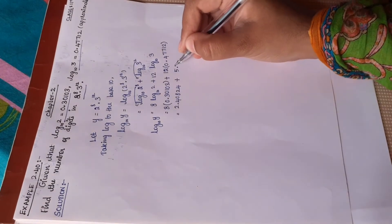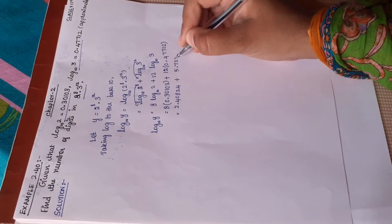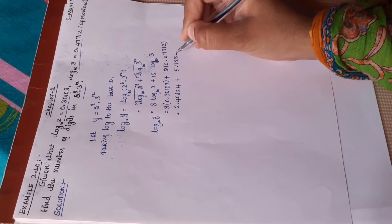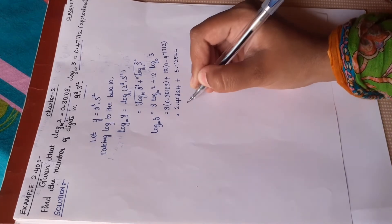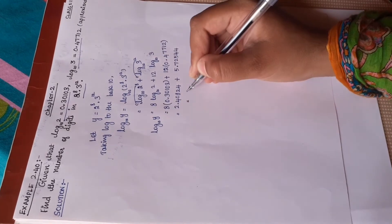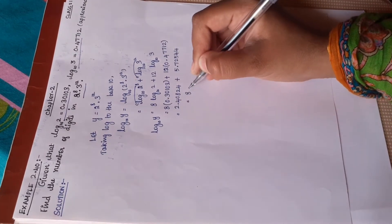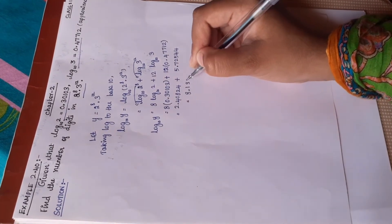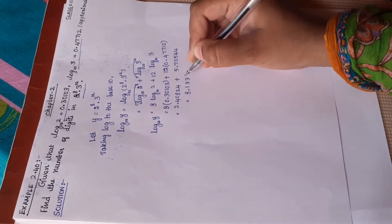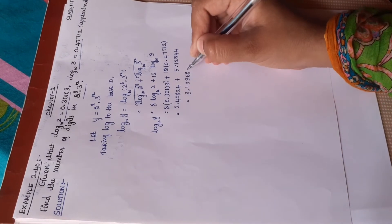12 into 0.47712 gives 5.72544. Adding both results together, we get log y to the base 10 equals 8.13368.